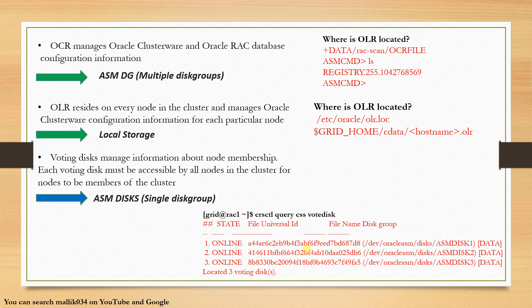What is the Voting Disk? Voting Disk contains the node membership. If I have a three or four node cluster, all four node members should be in my Voting Disk, and then all nodes of the cluster should be able to access my Voting Disk. This Voting Disk will be in my ASM disks — please note: Voting Disk will be in my ASM disks, not a disk group. OCR will be in my ASM disk group, and I can have multiple disk groups, like a data disk group and a RECO disk group.